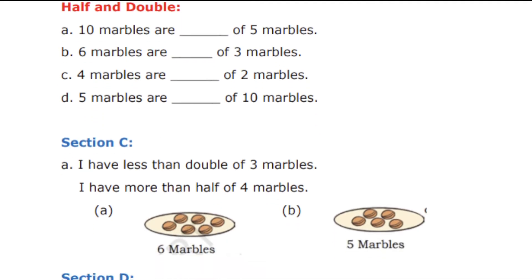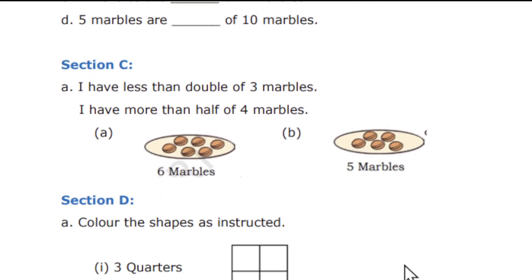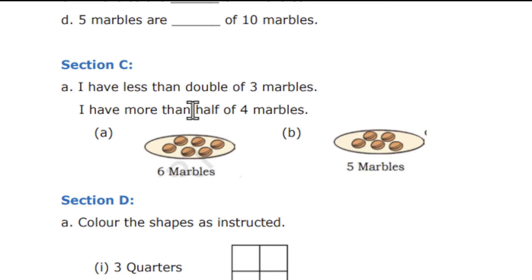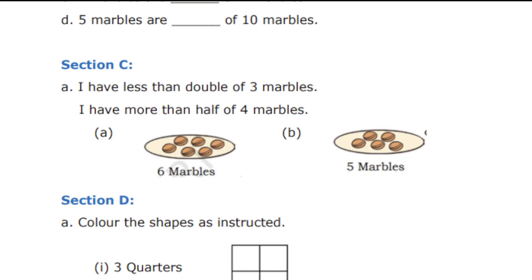Session C is about half and double. You have to read the sentence — I have given a clue: 'I have less than double of 3 marbles' and 'I have more than a half of 4 marbles.' This is not exactly a book-based question — I have modified it. So read, understand, and then do it.